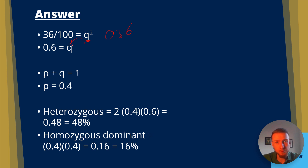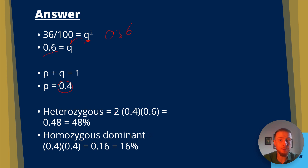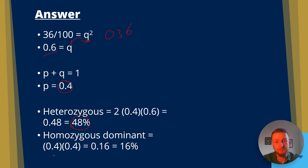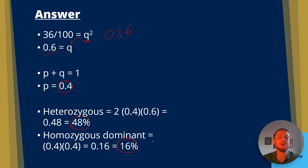Square rooting Q squared gives Q equals 0.6. Using P plus Q equals 1, P equals 1 minus 0.6 equals 0.4. The heterozygous population is 2 times 0.4 times 0.6, giving 48% heterozygous. Homozygous dominant is P squared: 0.4 times 0.4 equals 0.16, or 16%. We can then explain whether each genotype frequency increased or decreased compared to the original population.